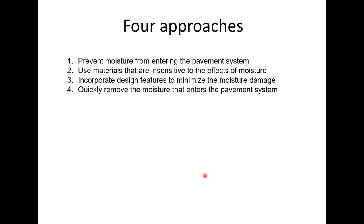And four approaches are generally used to control or reduce the moisture problem. The first, prevent moisture from entering the pavement system. The second, use of materials that are insensitive to the effect of moisture. Third, incorporate design features to minimize the moisture damage and fourth, quickly remove the moisture that enters the pavement system.